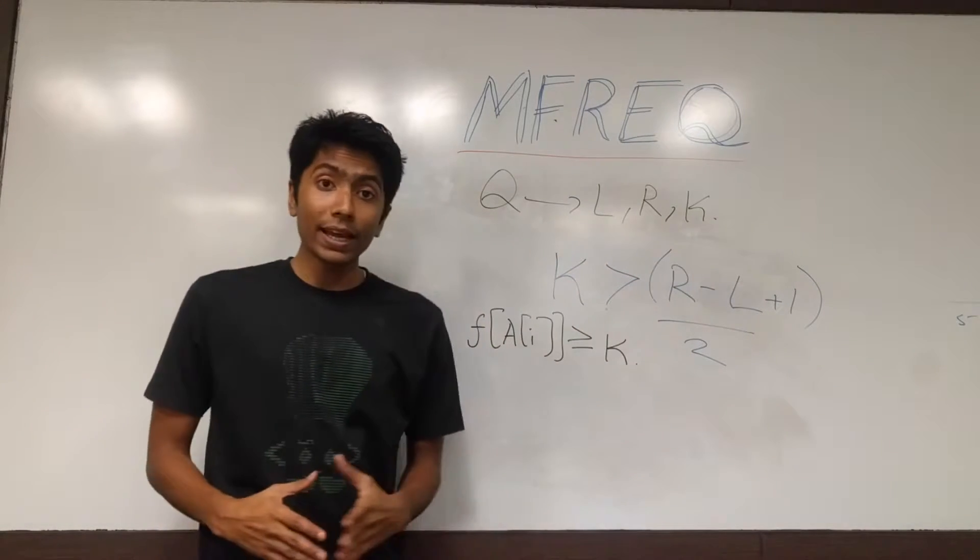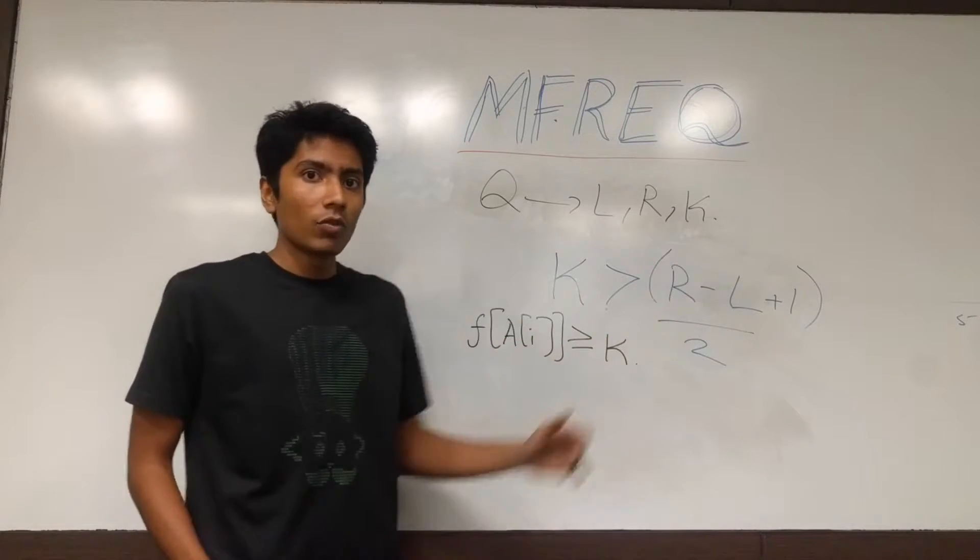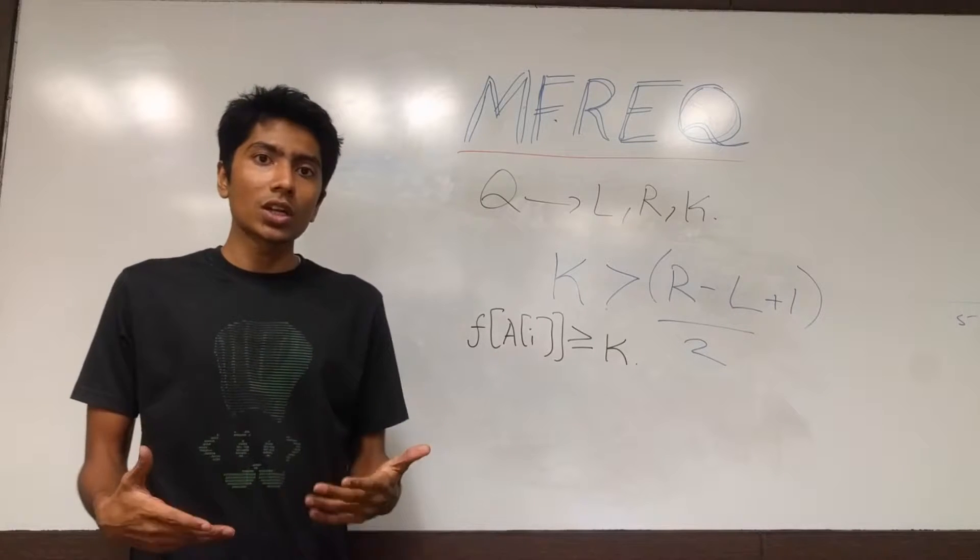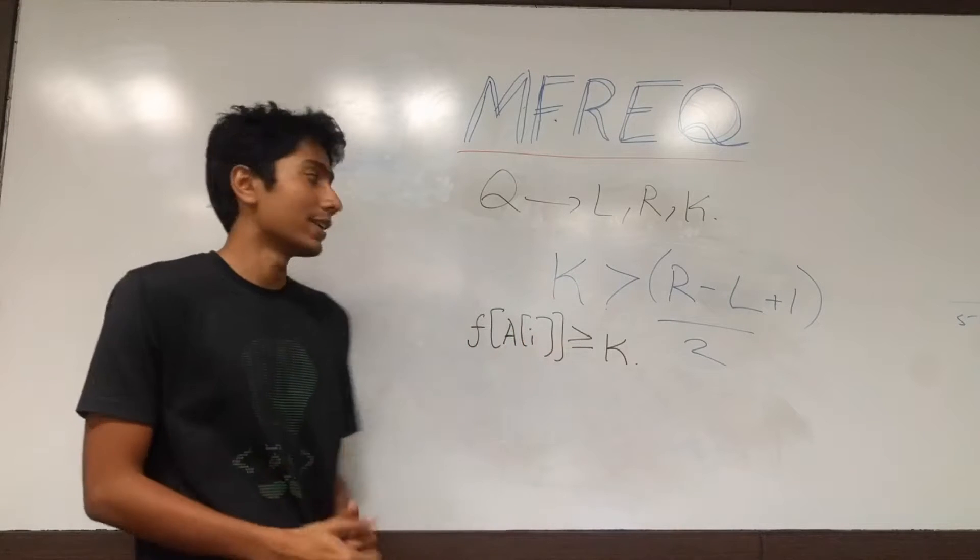So what these queries signify is a range from left to right and a number k which is actually the frequency of the most occurring element. Statistically, that's a mode of a given data set.